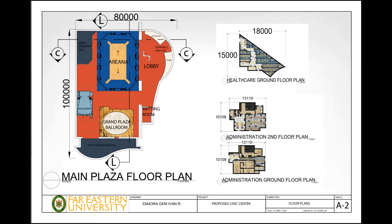Proceeding to the floor plan — on the top right side you can see the entrance and exit, and the lobby. There is the meeting room, the main arena, and the grand plaza or ballroom. The auditorium is at the top. The north exhibition hall is above and the south exhibition hall is below. You can also see the drawings for the healthcare ground floor plan and the administration floor plan. In the main building, you can see the longitudinal section and the cross section.